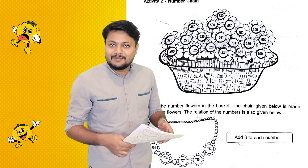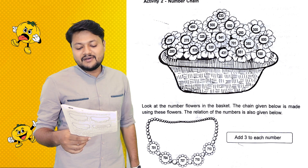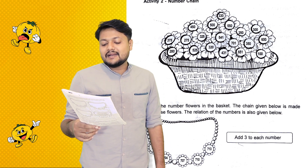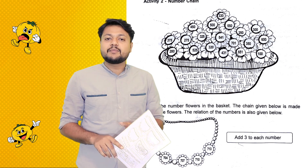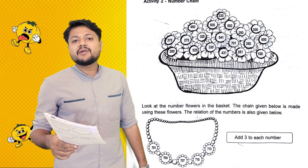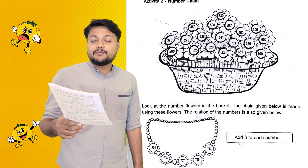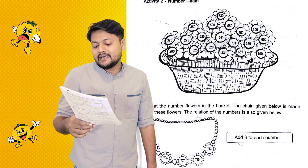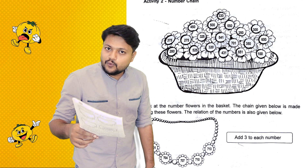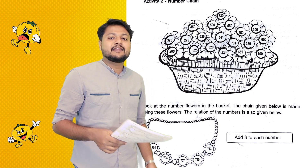Number chain. Look at the number flowers in the basket. The chain shown below is made using these flowers. The relation of the numbers is also given. For example: 701, 704, 707. Add 3 to each number.